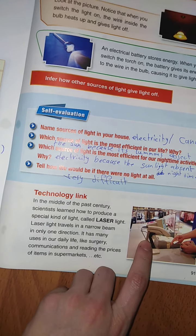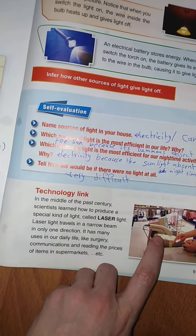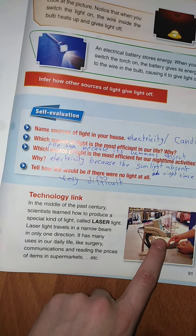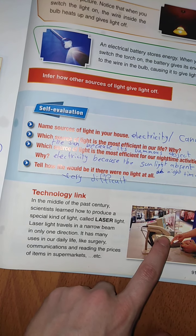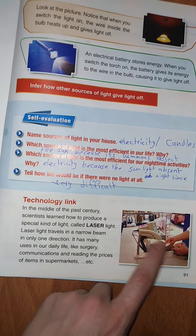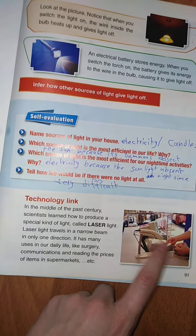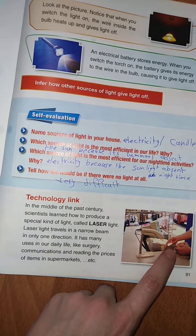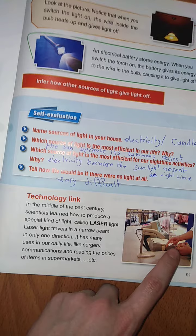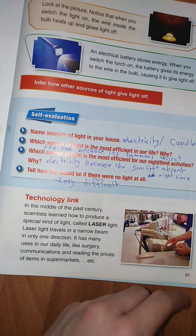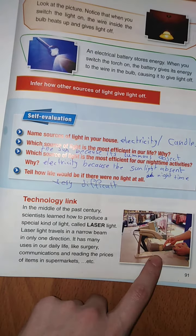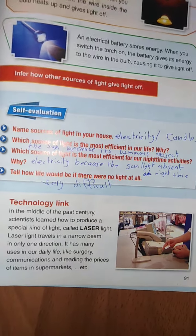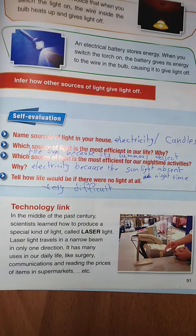In this machine we have laser light — it helps the cashier in the supermarket to read the price of objects. That's all for today, thank you for listening.